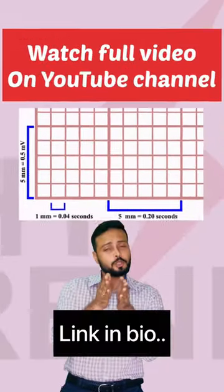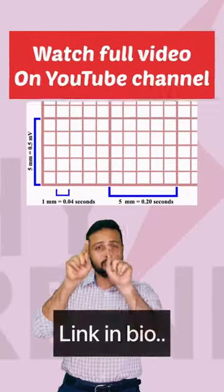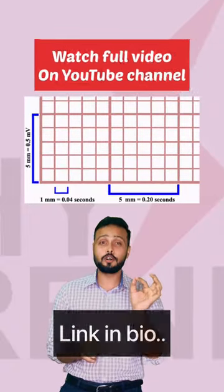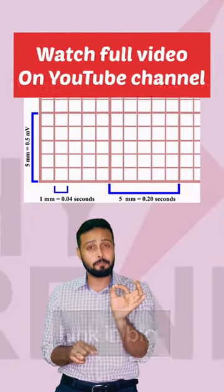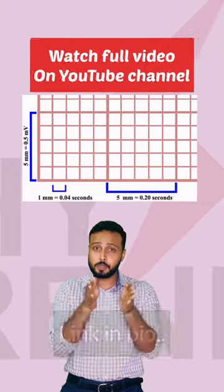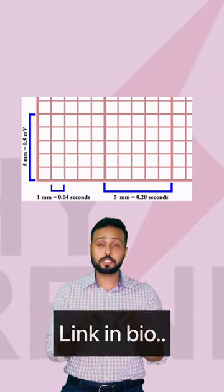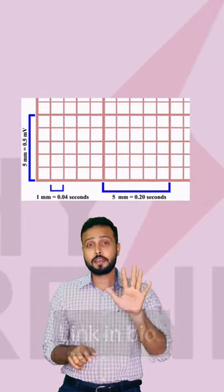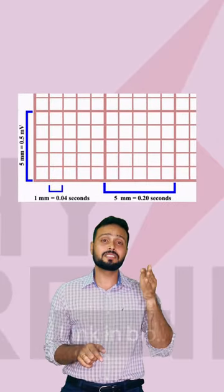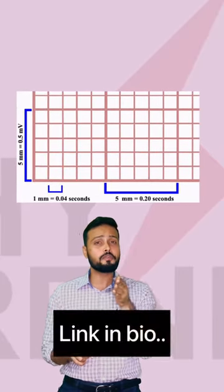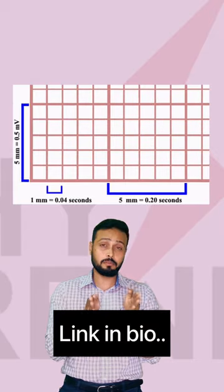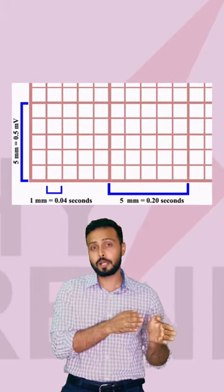In ECG we have seen that there are small boxes and one big box. Each small box is 1 mm, and 5 small boxes together make a big box of 5 mm. So within this, a duration of approximately 3 mm to 5 mm — almost one big box — will be taken up by the PR interval.